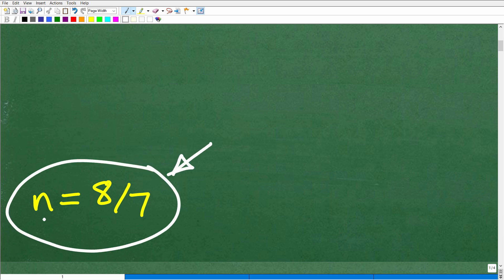Okay, so of course I have a variable here, n, but that just represents the unknown number we're looking for. So 8 sevenths is the correct answer.